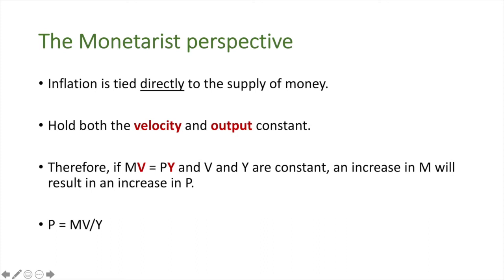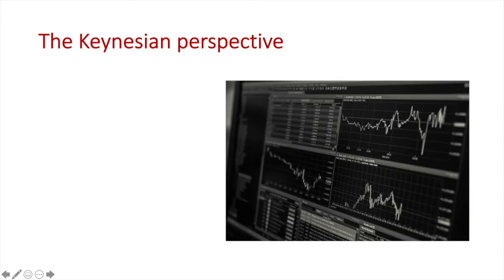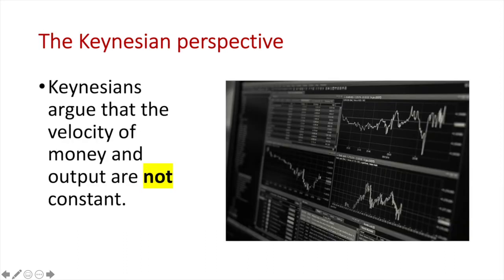However, not all economic schools of thought accept this idea. Keynesians argue that the velocity of money and output are not constant. For example, in the recession of 2008, many central banks around the world pursued policies of quantitative easing that dramatically increased the money supply but did not necessarily translate into dramatic changes in the price level. It's important to note that there is significant debate around this topic, and the link between the money supply and inflation is questioned by many.